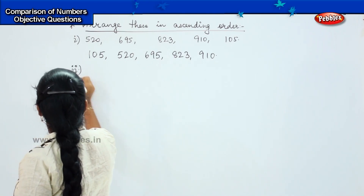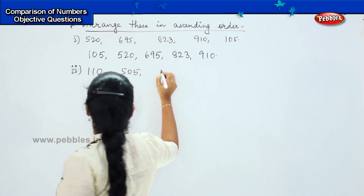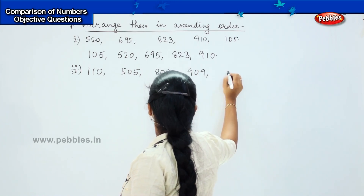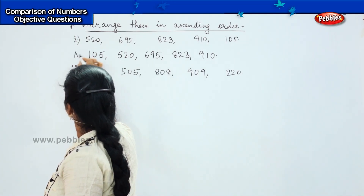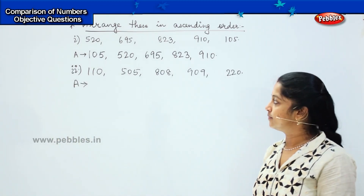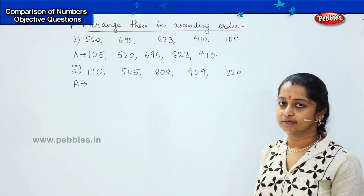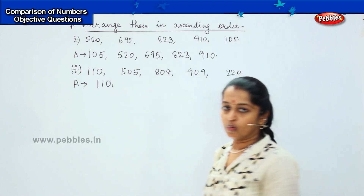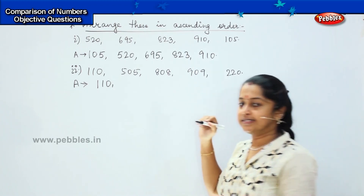Here is your next question: 110, 505, 808, 909, 220. Now you have to find the smallest number from the given lot. Which is the smallest number here? It is 110. After that, what is the next number? It is 220.